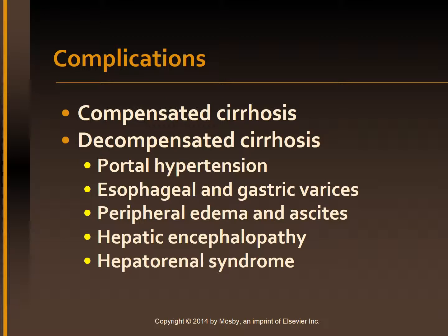Complications: patients without complications of cirrhosis are said to have compensated cirrhosis, and those who have one or more complications of their liver disease have decompensated cirrhosis. Major complications of cirrhosis are portal hypertension with resultant esophageal or gastric varices, peripheral edema, ascites, hepatic encephalopathy — indicated by mental status changes including coma — and hepatorenal syndrome.